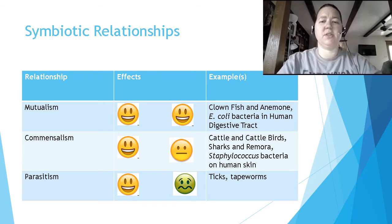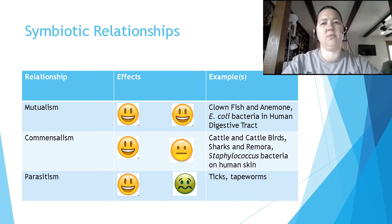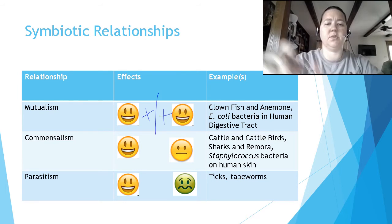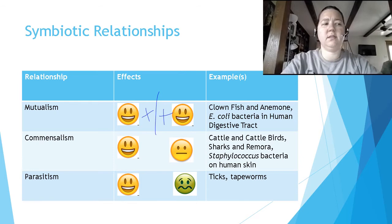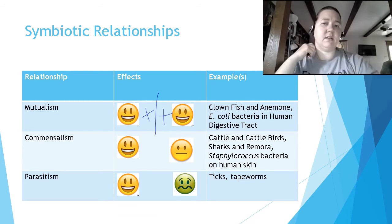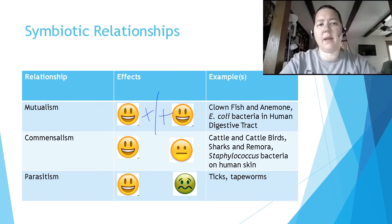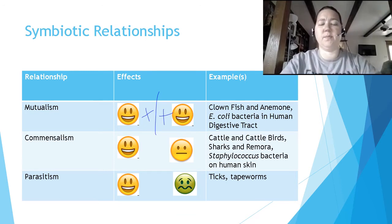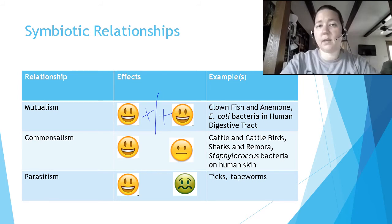Symbiotic relationships are really close relationships between organisms. There are three types. Mutualism is a plus-plus situation — one species benefits and so does the other. Examples include the clownfish and the anemone, E. coli bacteria in our digestive tract that help us digest food, and coral reef cleaning stations. If you've ever been on an antibiotic and had stomach upset, that can be because we've disrupted our microbiome.